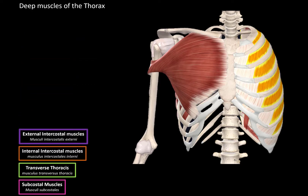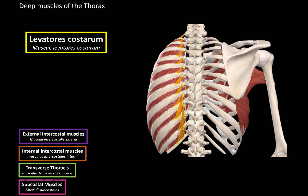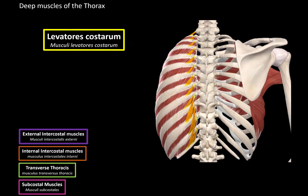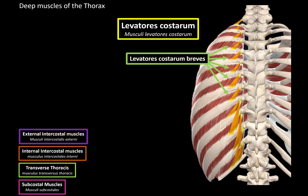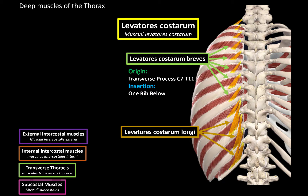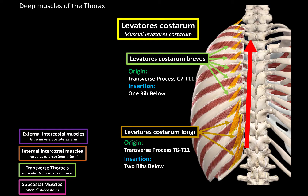After that, we have the levatores costarum muscles. These are tiny muscles on the backside here, and are divided into two groups. First, we have the levatores costarum breves, which are the short levatores costarum — they originate from the transverse processes of C7 to T11 and insert one rib below, so they're short because they don't skip any ribs. The other group is the levatores costarum longi — these originate from T8 to T11 and insert two ribs below; they're longer because they skip one rib completely. When they contract, they pull the thorax up to aid with inspiration.